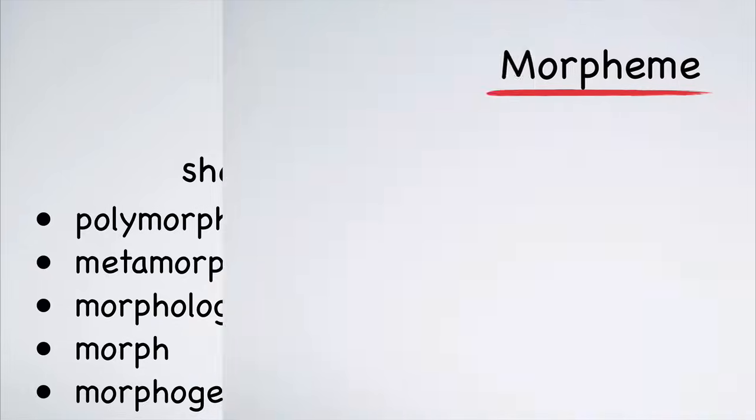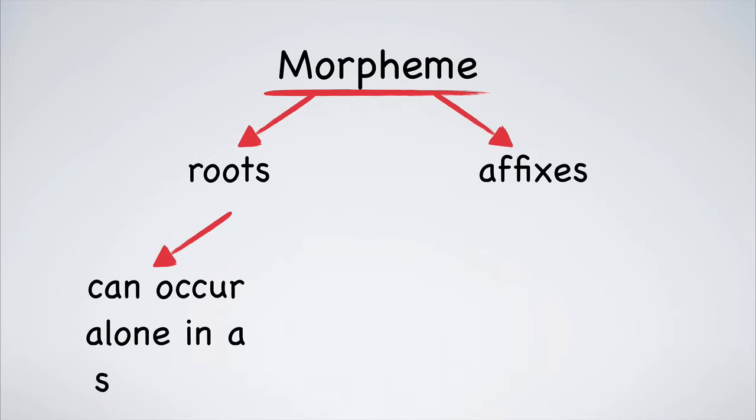All words are made of morphemes. English uses two types of morphemes: roots and affixes. Roots can exist independently; they do not need to be added to anything else to be used in a sentence. For example, eat. If you try to separate 'e' or 'tuh', they have no meaning on their own. Therefore, eat is a root.